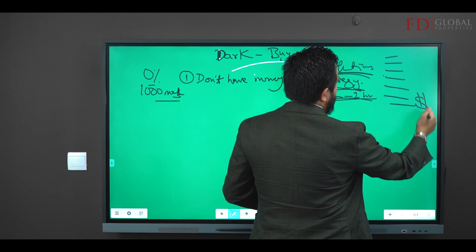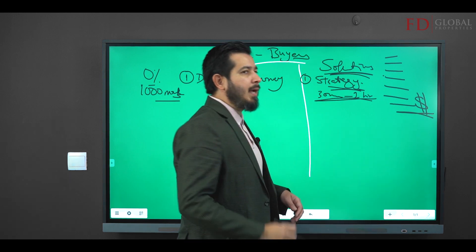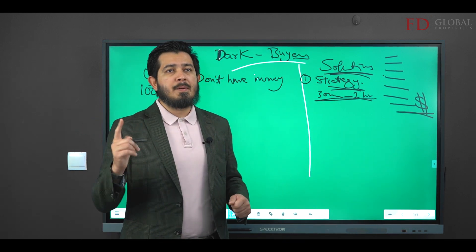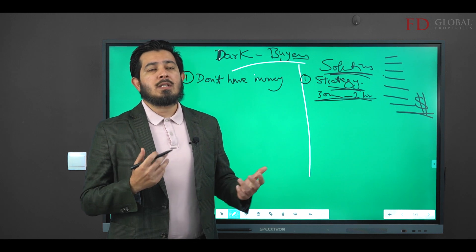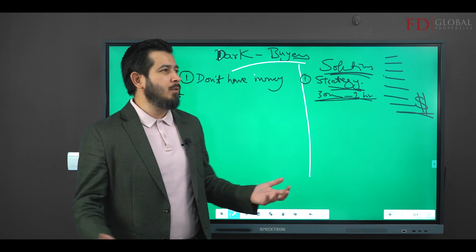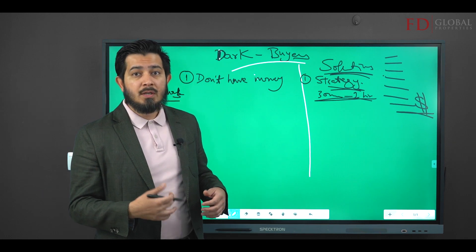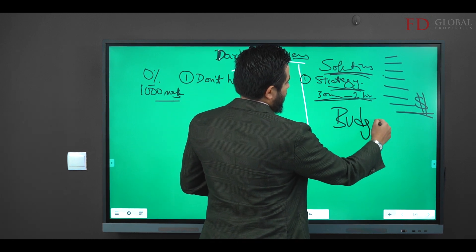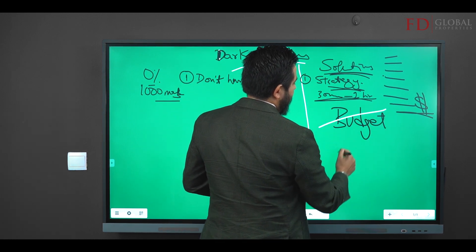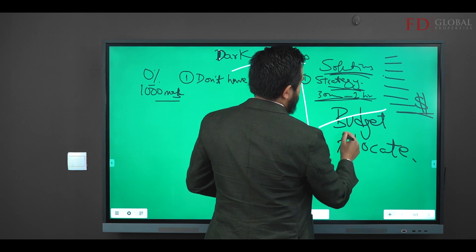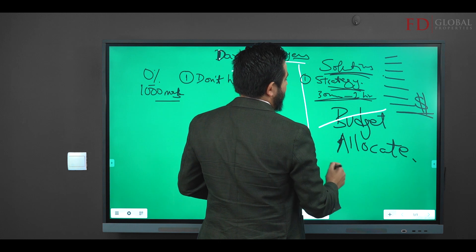The way you ask the money question, I'll give you two examples. This is my managing director. He said just ask them what do you want to allocate towards this investment. You understand the word allocate? It's better than asking them what's your budget. Don't say budget, don't say what's your budget. Just say how much do you wish to allocate.